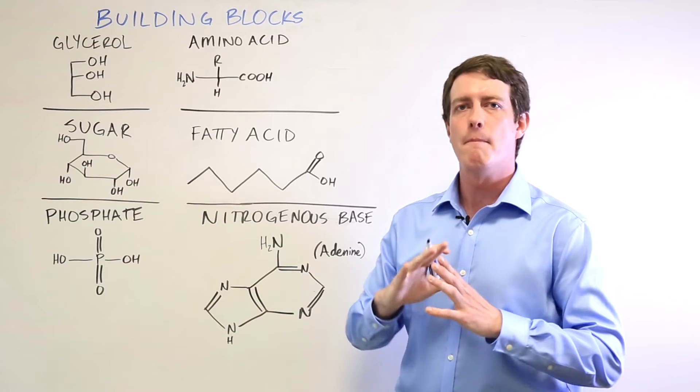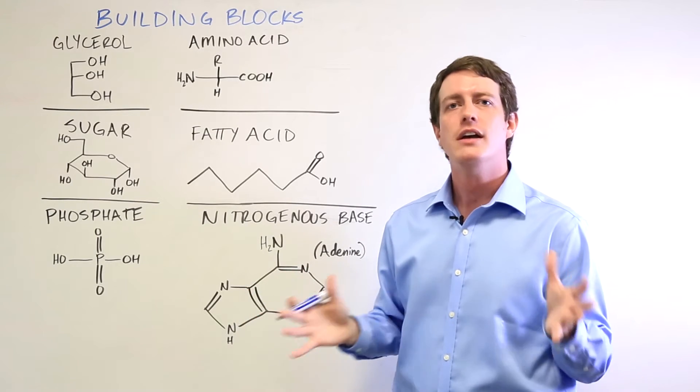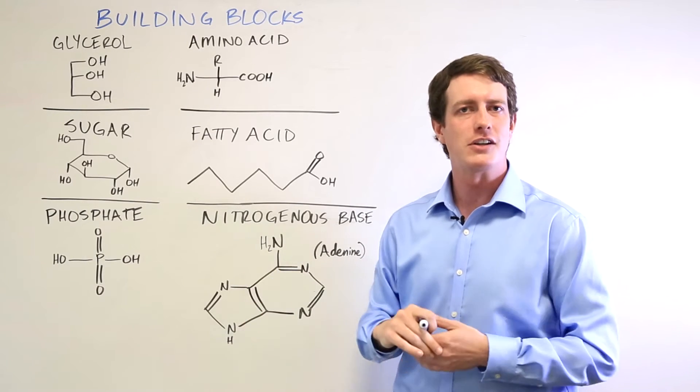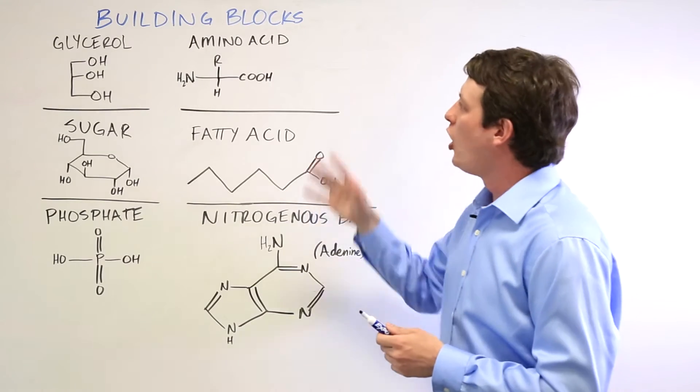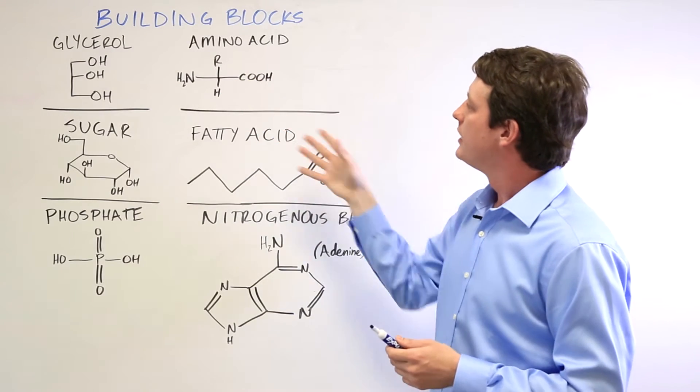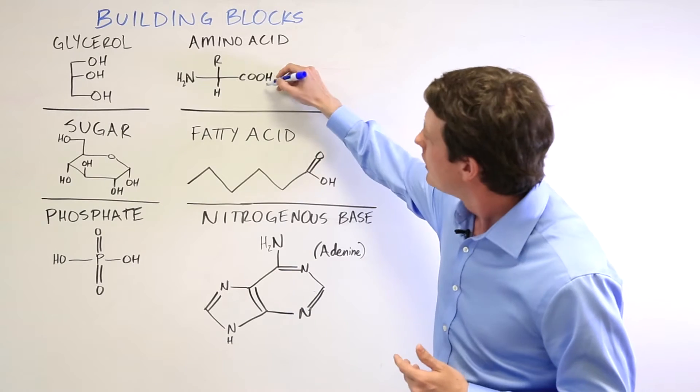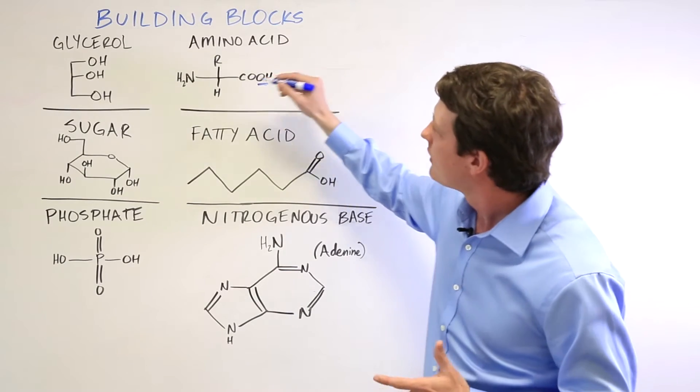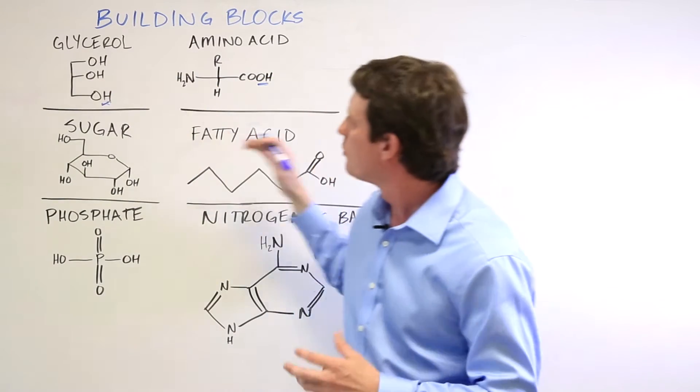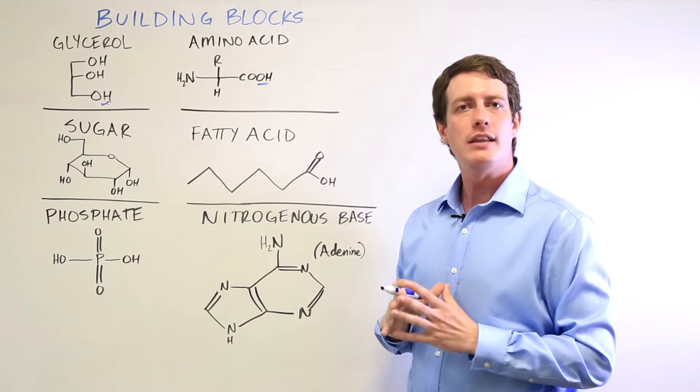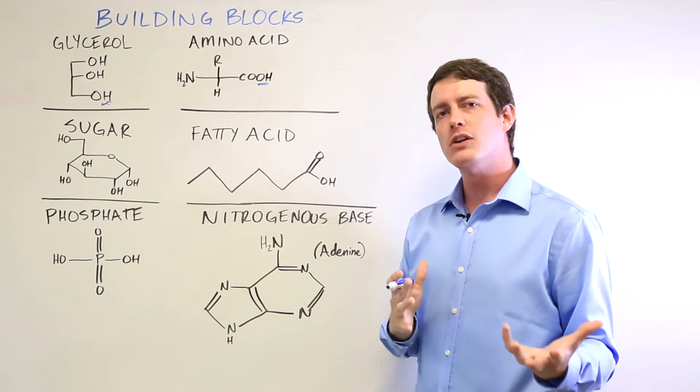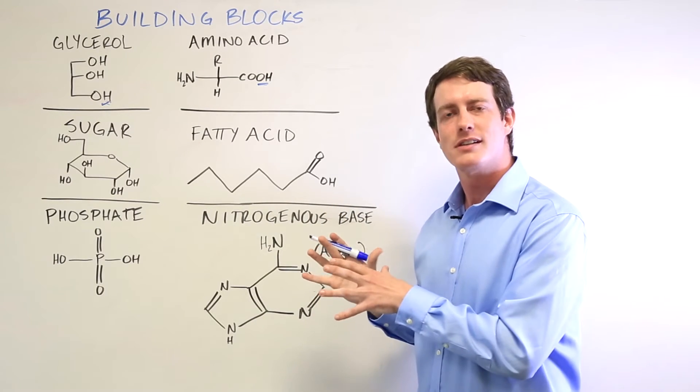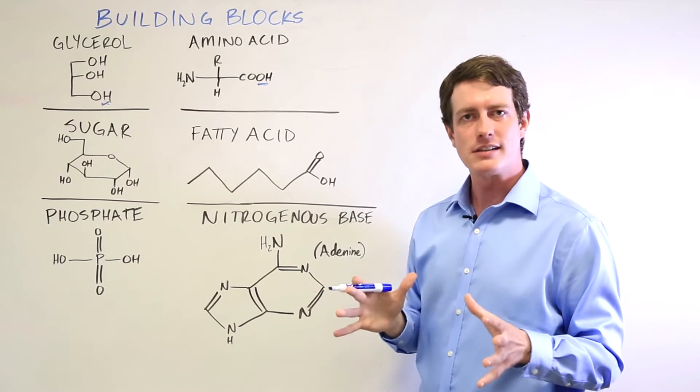And these when combined form most of the major biomolecules that allow the cell to function in the various ways that it does. All of these can be combined using a condensation reaction where you take the OH group of one thing and a hydrogen from another one and you combine them in a way that yields water. You may have also heard of condensation reactions being referred to as dehydration synthesis.